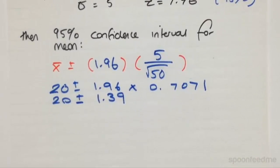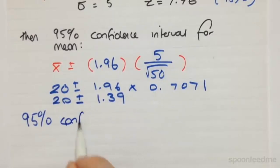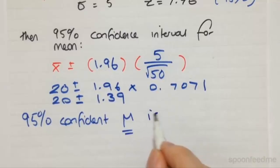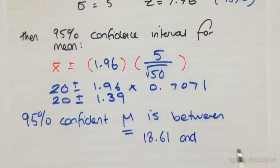So what this tells us, in terms of interpreting this, we are 95% confident that based on the information we have gathered about the population and our sample, that the population mean mu will lie between 18.61 and 21.39.